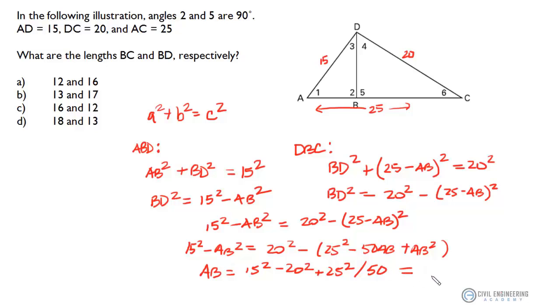Punch that into your calculator and you should get AB equals 9. Okay, so now that we know the distance AB is 9, we can find the distance BC because we've got the distance AC.